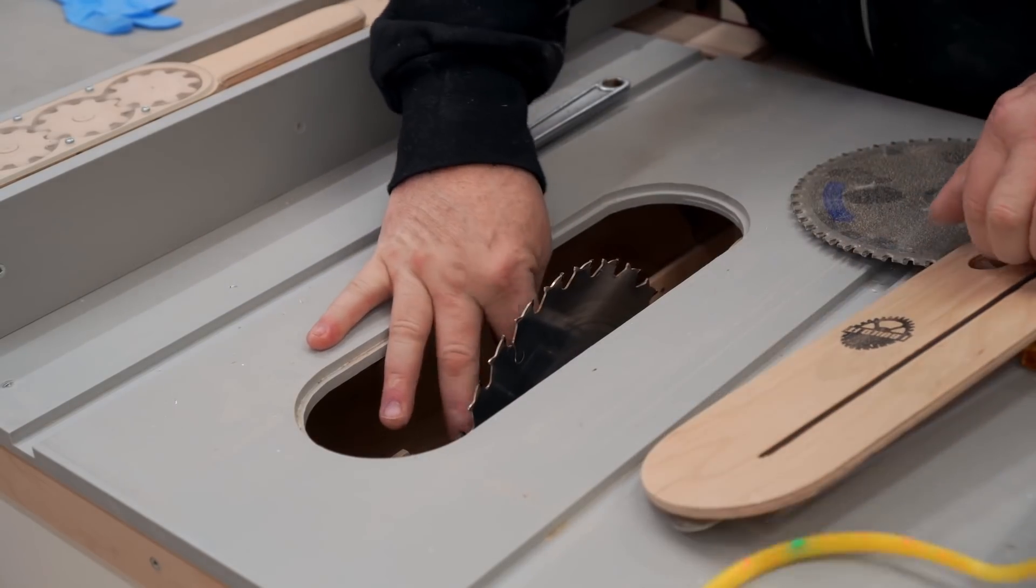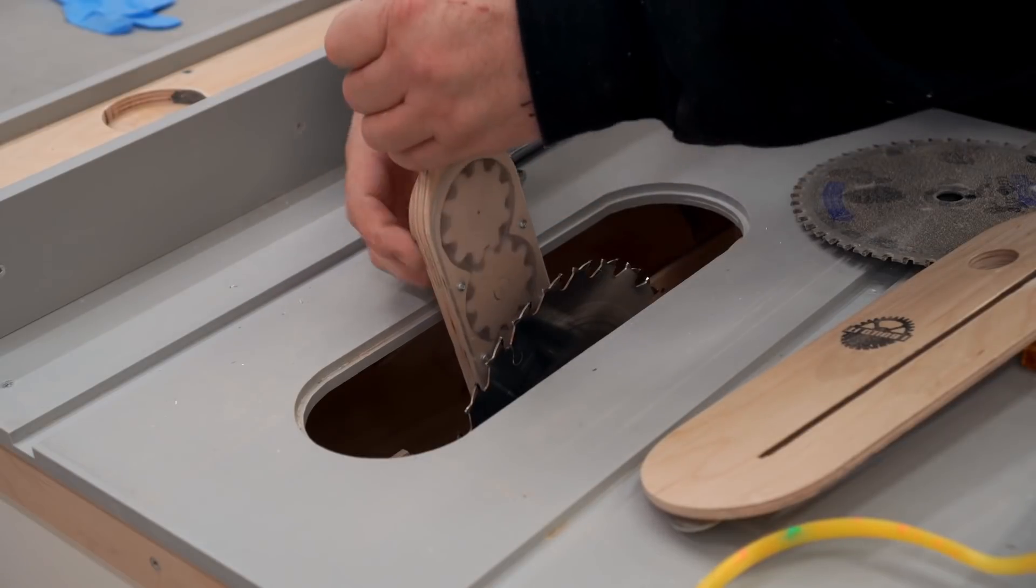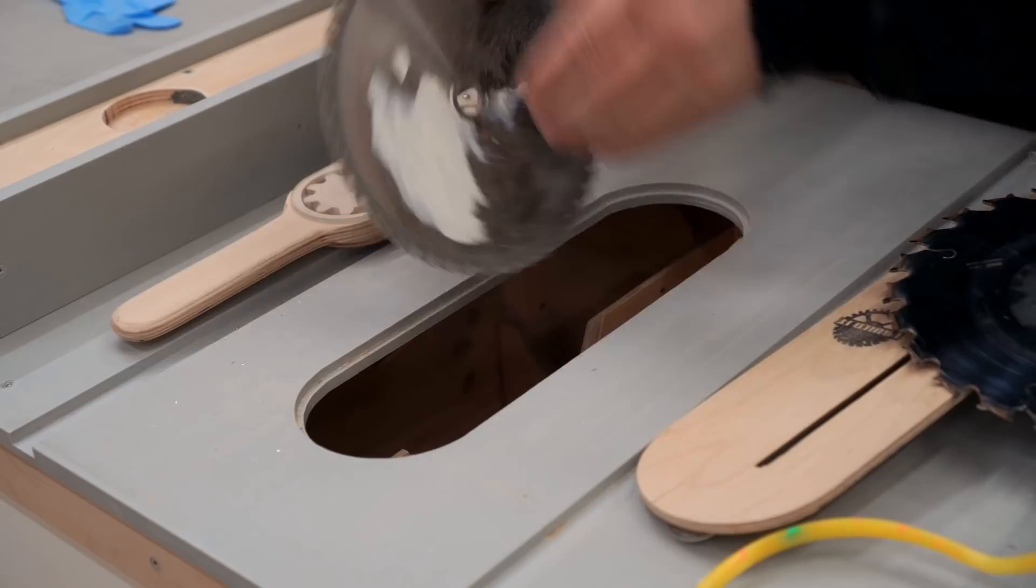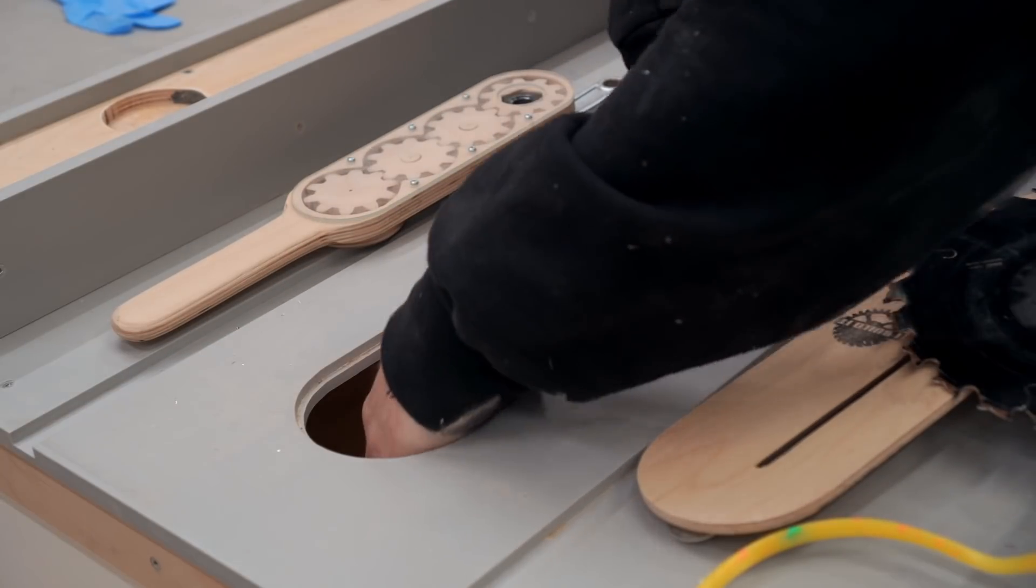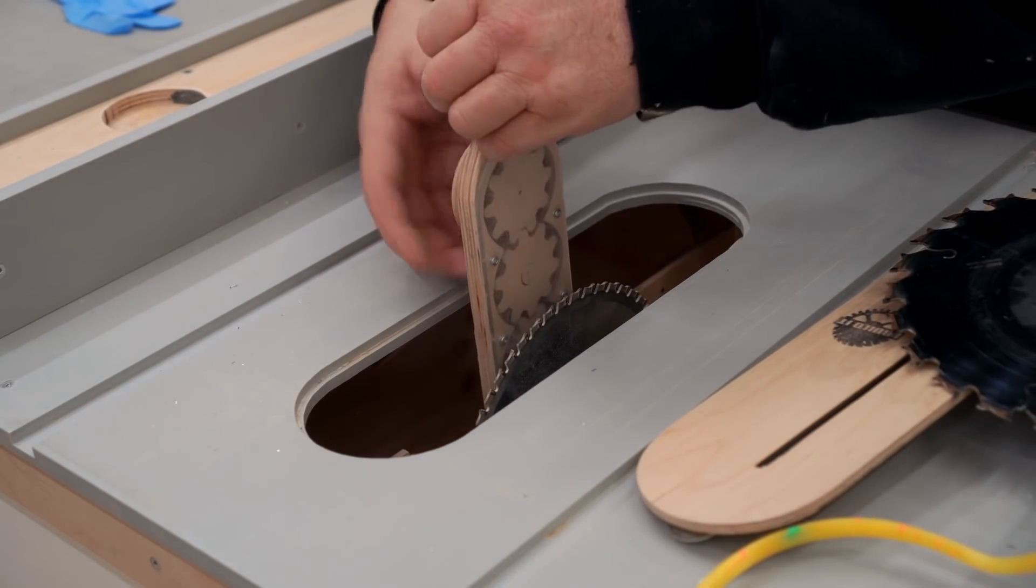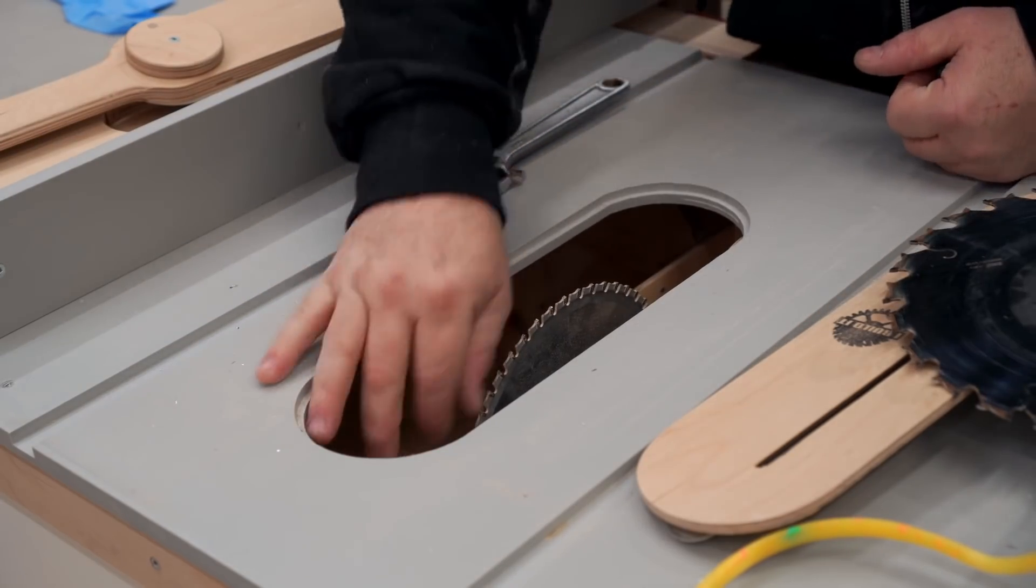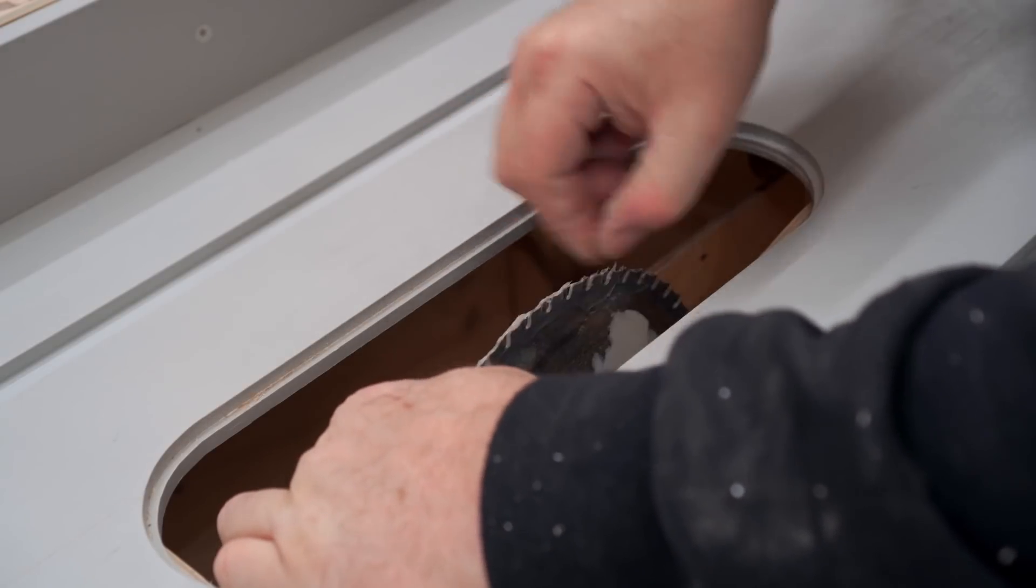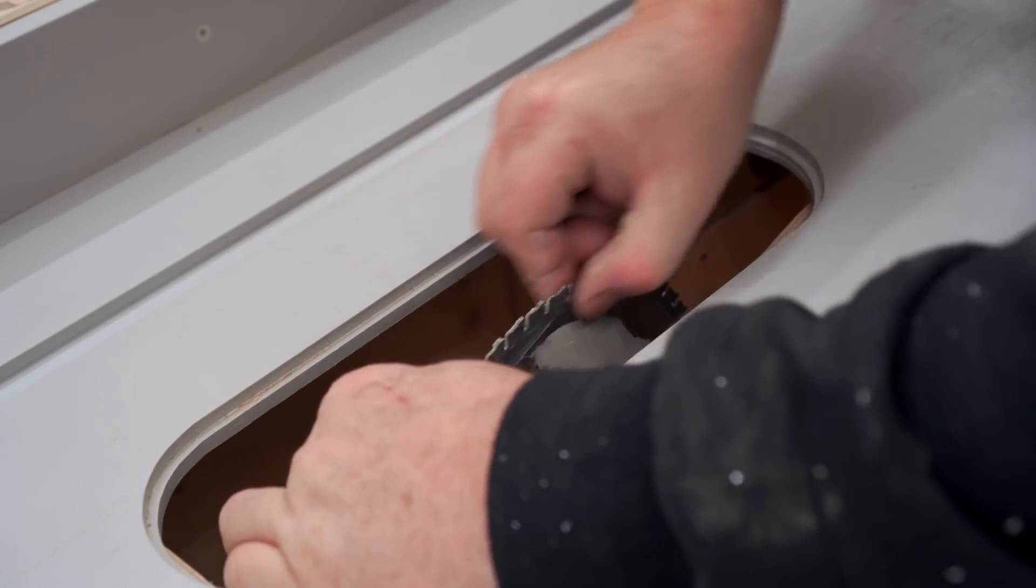While you can use regular carbide blades to cut aluminum, I really recommend getting a metal cutting blade. The biggest difference is that the teeth are at a different angle when they're cutting through the metal, flatter and not so hooked. I also like to lubricate the blade in some way and that'll make a cut smoother. Here I'm rubbing in some Vaseline.